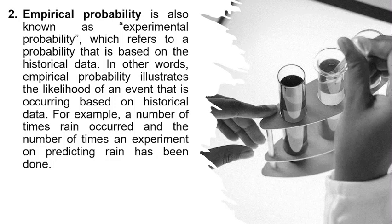The second type is empirical probability. As its name shows, it is something related to practical doing or practical happening. That is why it is called experimental probability, which refers to probability based on historical data and events that have already occurred and been practically done.